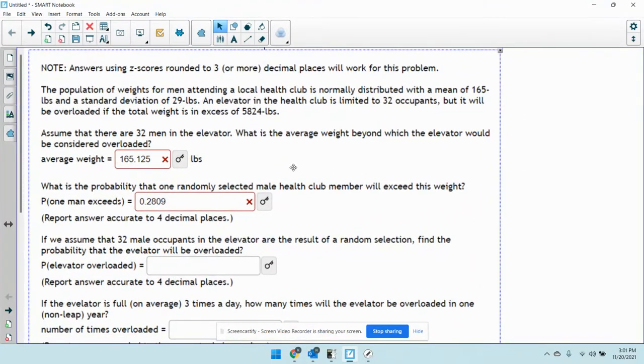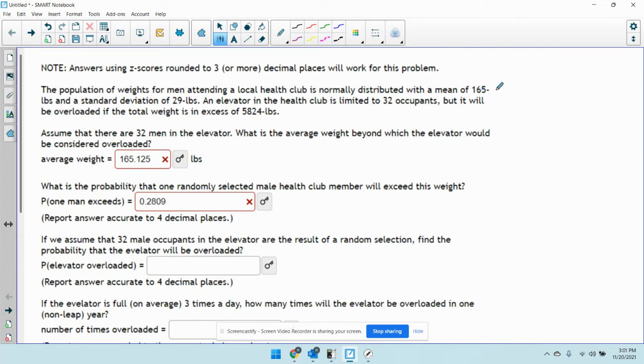This says, the population of weights for men attending a local health club is normally distributed with a mean of 165 and a standard deviation of 29. An elevator in the health club is limited to 32 occupants, but it will be overloaded if the total weight exceeds 5,824 pounds. Assume that there are 32 men in the elevator. What's the average weight beyond which the elevator could be considered overloaded?